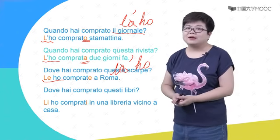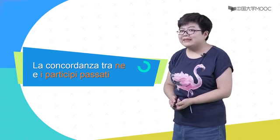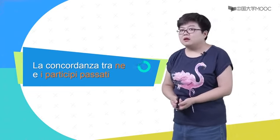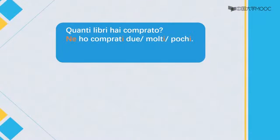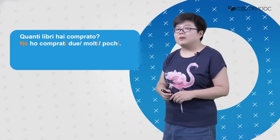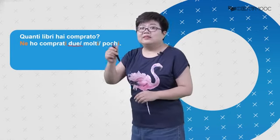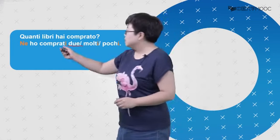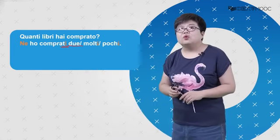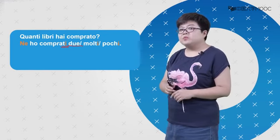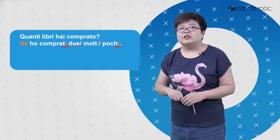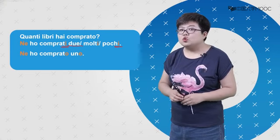好，那么我们再看La concordanza tra ne e i participi passati，也就是ne和过去分词的配合。Quanti libri hai comprato? 你买了几本书？我们知道ne经常代替数量。Ne ho comprati due. Due既然是两本，ne代替的实际上就是复数libri，阳性复数的概念，所以过去分词也要用阳性复数的词尾：comprati。如果我们要说买了好多：Ne ho comprati molti. 买了几本不太多：Ne ho comprati pochi.